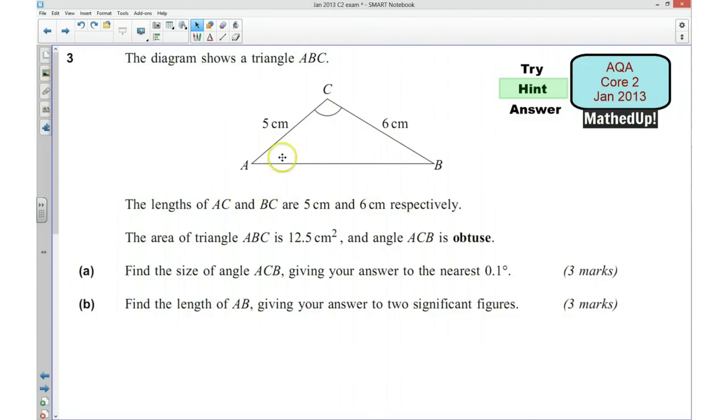So we're given this triangle ABC and we know two of the lengths: AC is 5 cm and BC is 6 cm. We're also told the area of the triangle is 12.5 cm squared, and we also know something about this angle here, ACB, and there seems to be a point made about this because it's in bold. That angle is obtuse.